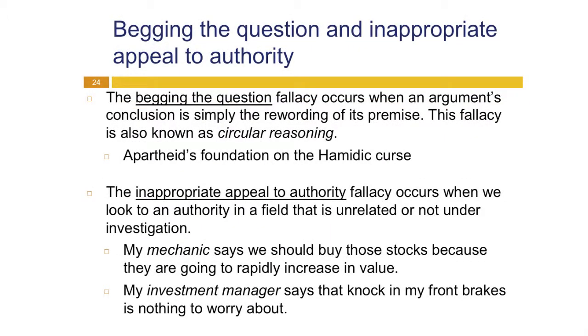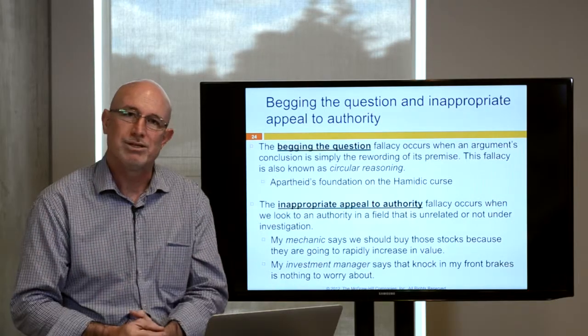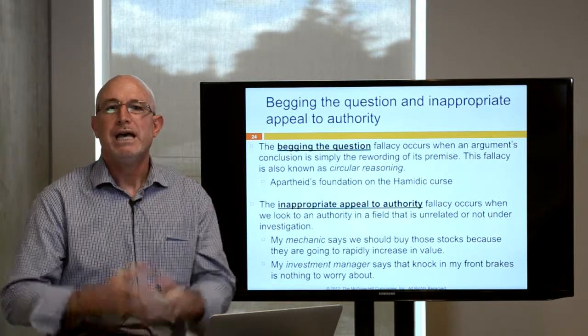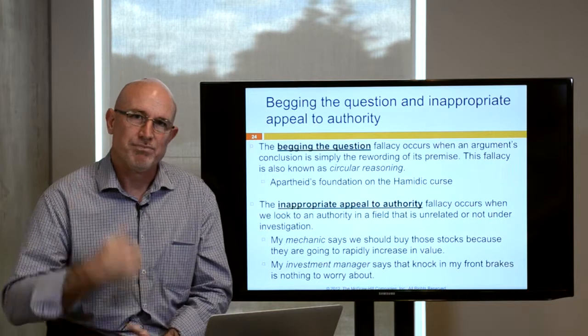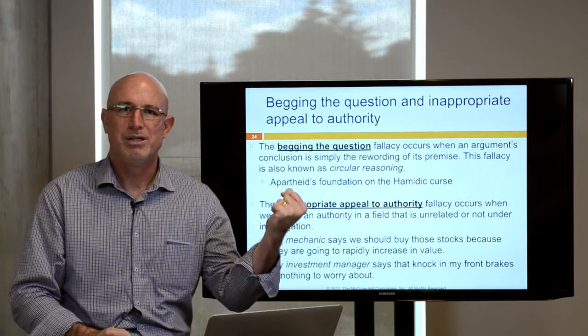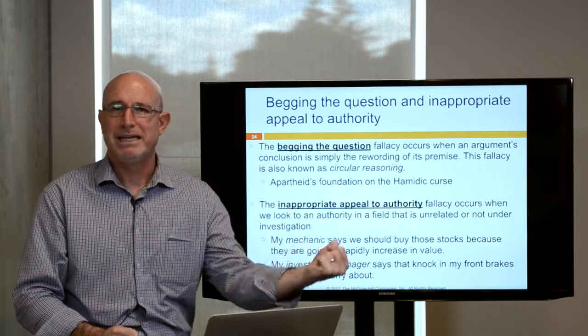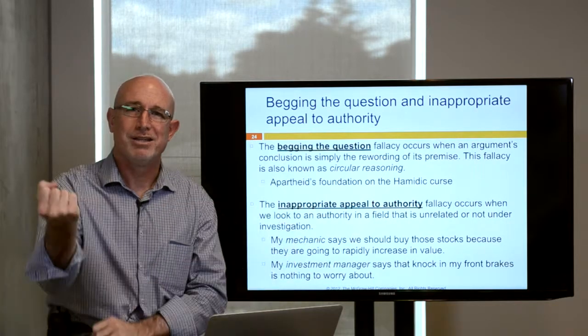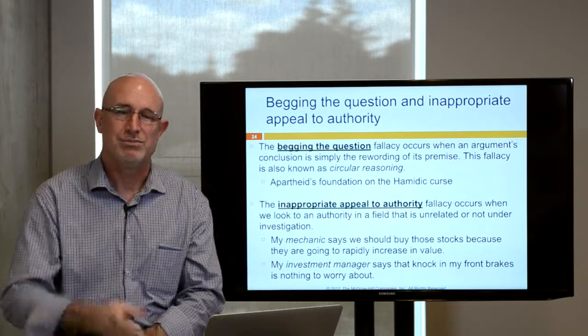The begging the question fallacy occurs when an argument's conclusion is simply the rewording of its premise — also known as circular reasoning. For example, apartheid's foundation of the Hamitic curse: people who carry water buckets are under the Hamitic curse. The circular reasoning went like this — people who carry water buckets are cursed; the indigenous African people are slaves who can only carry water buckets; therefore they are under the Hamitic curse; therefore we have a right to oppress them. That's circular reasoning.